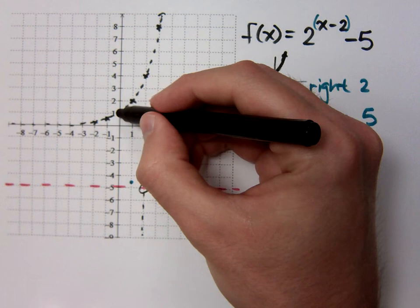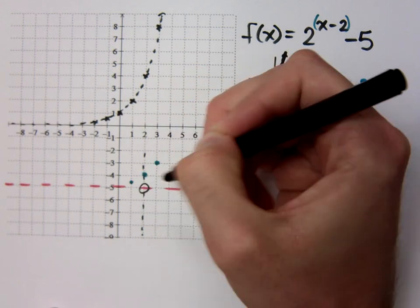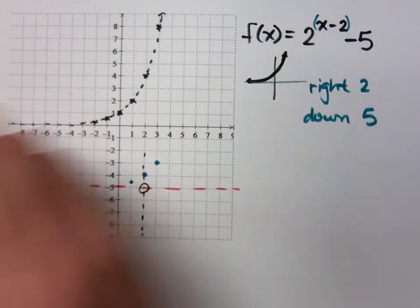So if I take this point, go 1, 2 to the right and down 1, 2, 3, 4, 5. There it is.